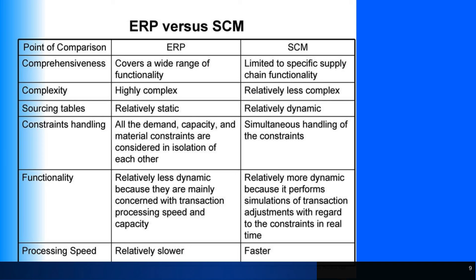Now let's discuss the difference between ERP and SCM. You can think of ERP as the body and SCM as the brain. ERP is complex software involving multiple processes, but SCM — supply chain management — is the chain that makes it work. Without SCM, ERP is just a static object. ERP is relatively slower than SCM because SCM encompasses the broader operational thinking of the entire organization.